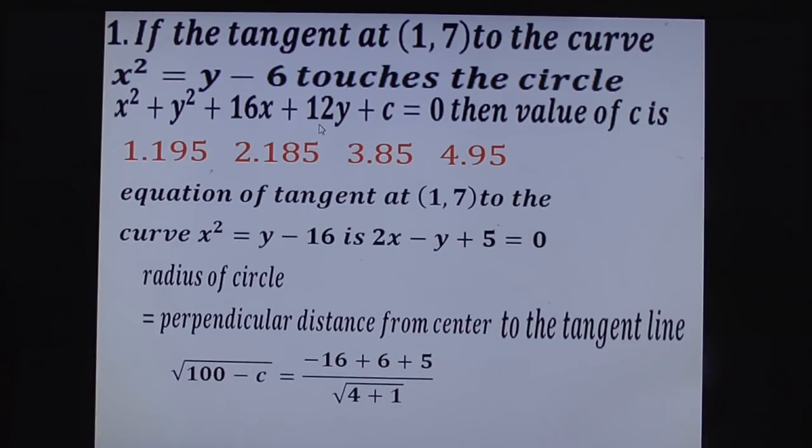From (-8, -6), the perpendicular distance to this line: substitute x = -8, y = -6, that is [2(-8) - (-6) + 5] / √(2² + 1²) = [-16 + 6 + 5] / √5 = -5 / √5. Now apply the tangency condition.